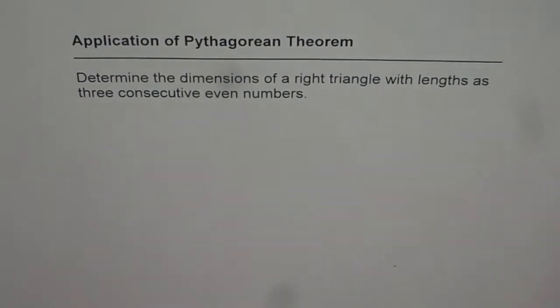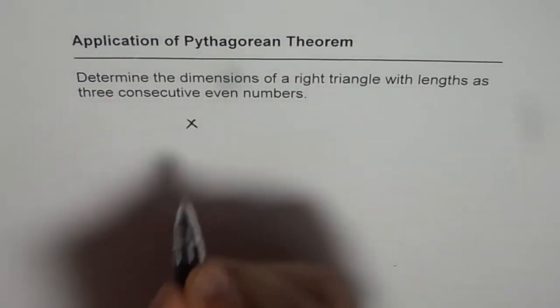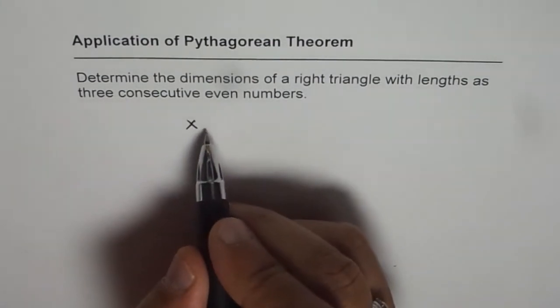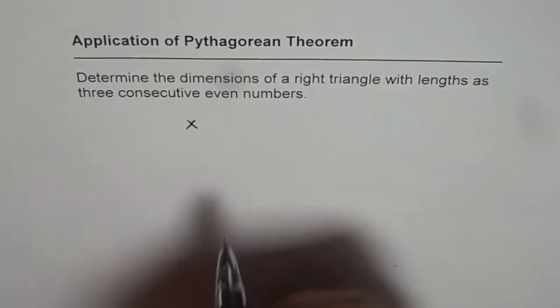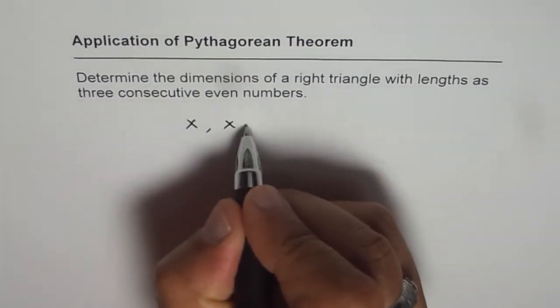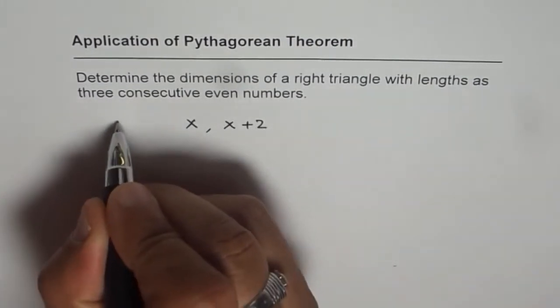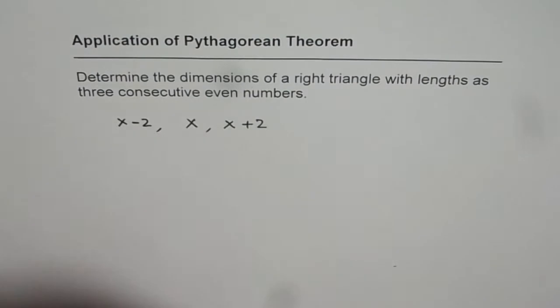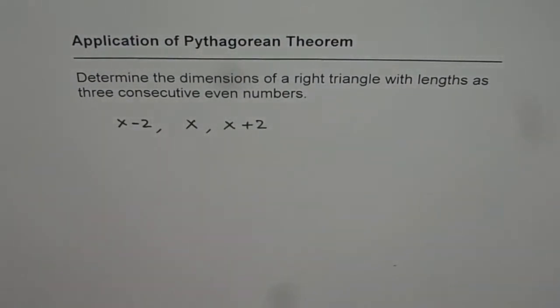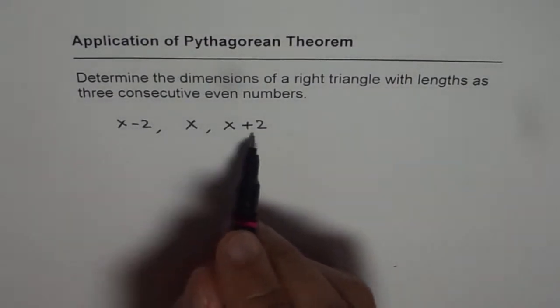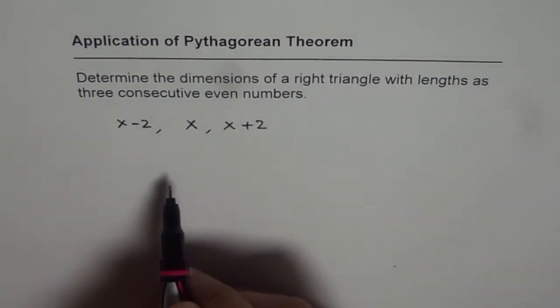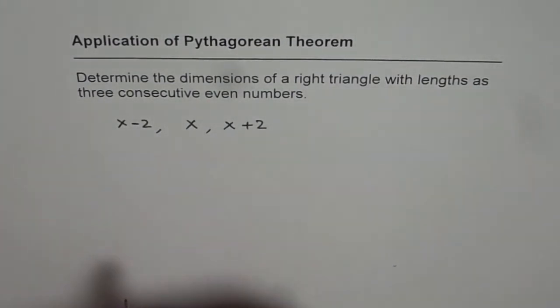So if one of the even numbers is x, then the others could be x plus 2, x plus 4. And we could also take numbers like x plus 2 and x minus 2. This combination actually helps to calculate better. So I'll prefer to use these three consecutive even numbers rather than x, x plus 2 and x plus 4.